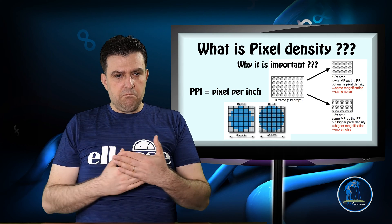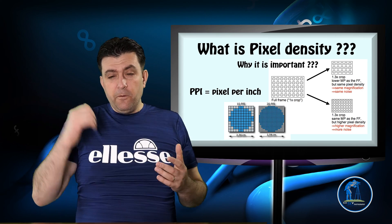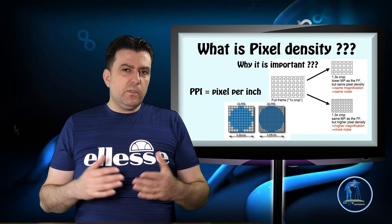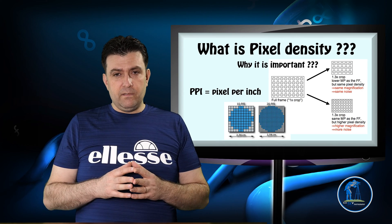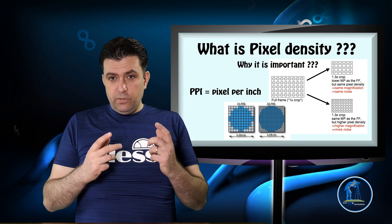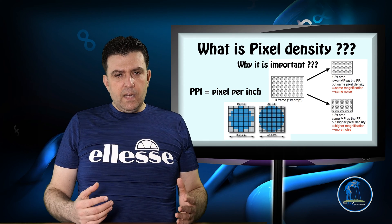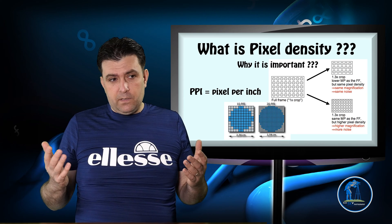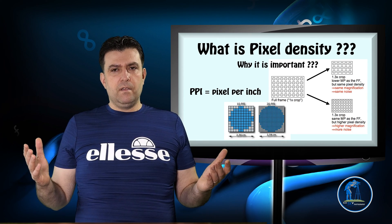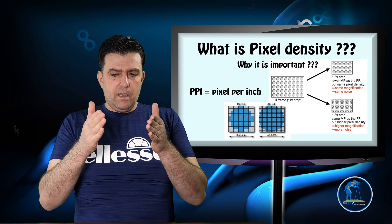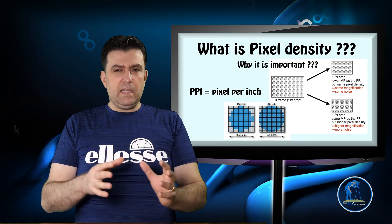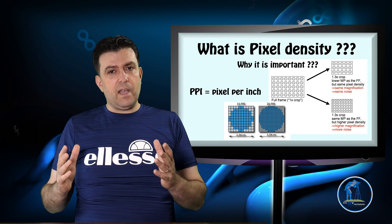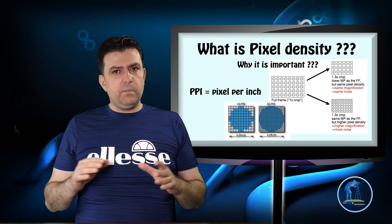A 24 megapixel APS-C sensor with no anti-aliasing filter — the pictures coming out of it will look like a 36 megapixel full-frame camera with an anti-aliasing filter. I used to have the Sony a7R — a 36 megapixel full-frame — and when I compared those photos to ones from a 24 megapixel Nikon APS-C with no anti-aliasing filter, I just couldn't make the difference. If someone disagrees, that's okay, but I ask you to prove it and show examples.